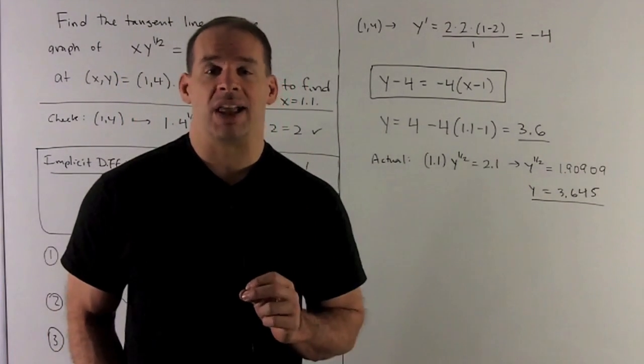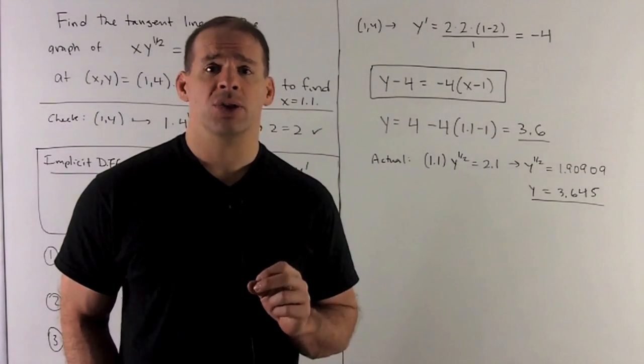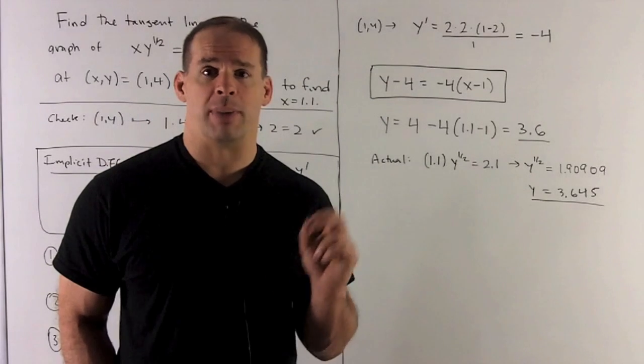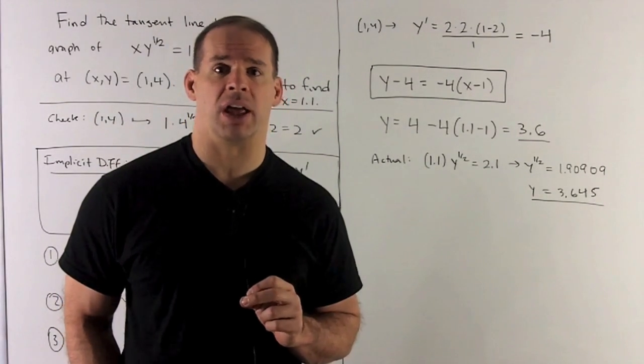So equation of the tangent line, y - y₀ = slope times (x - x₀). So I have y - 4 = -4(x - 1). That's our equation of our tangent line.